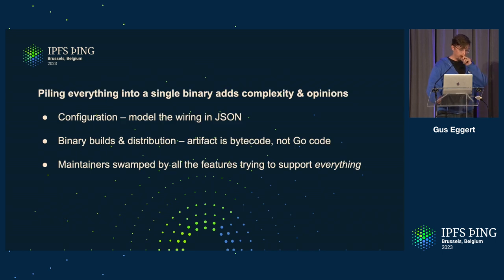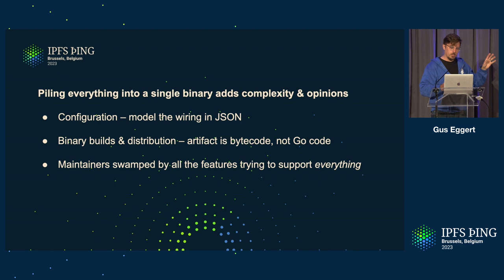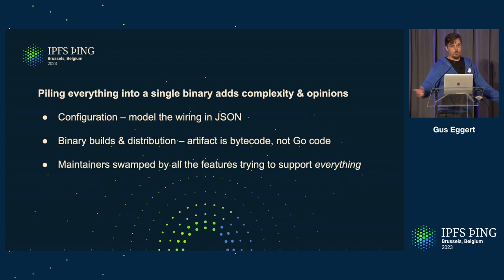There are some bespoke extension points like delegated routing. But piling everything into a single binary adds a lot of complexity. Once you do this, it's a CLI, so now you've got to have configuration for it. Every time you add something, there's a whole different abstraction layer for how you're going to model it in JSON. The output's not Go code — it's a binary. And the maintainer is us; we get swamped just trying to maintain all of this and make everybody happy.